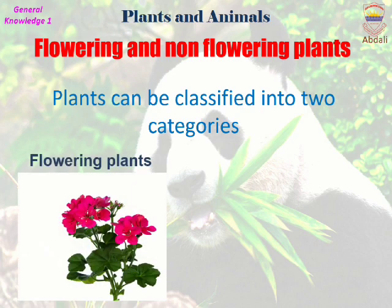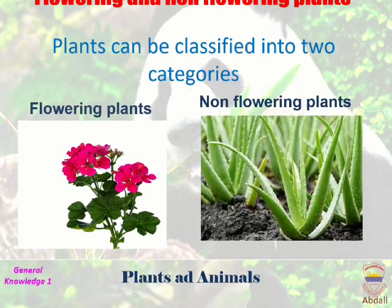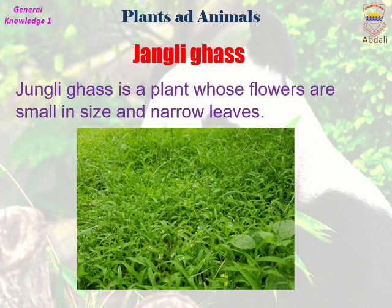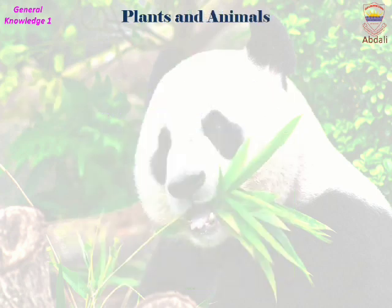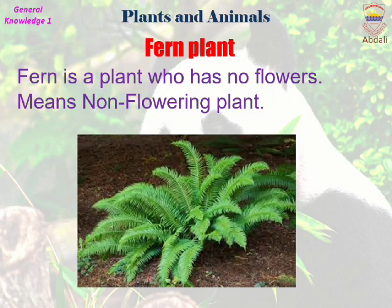Plants can be classified into several categories: flowering and non-flowering plants. Jungle grass is a plant whose flowers are small in size and has narrow leaves. Fern is a plant that has no flower, meaning it is a non-flowering plant.